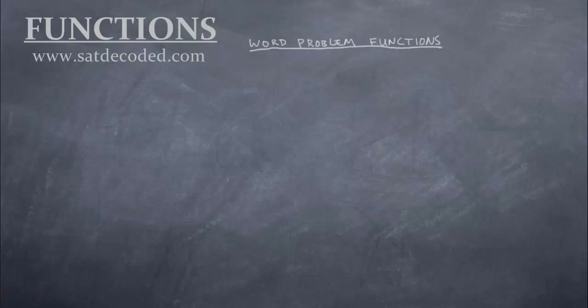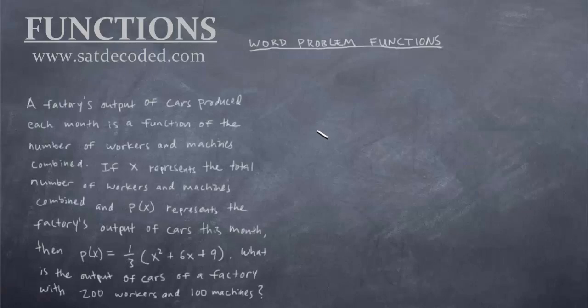This one's a little bit harder, but not too bad either. The question says a factory's output of cars produced each month is a function of the number of workers and machines combined. If x represents the total number of workers and machines combined, and p(x) represents the factory's output of cars this month, then p(x) = one third times the quantity (x² + 6x + 9). What is the output of cars of a factory with 200 workers and 100 machines?